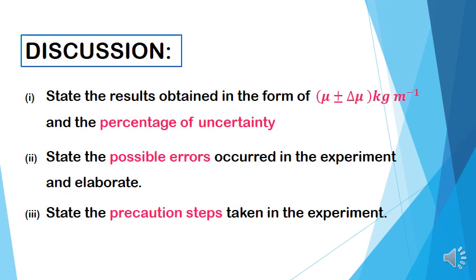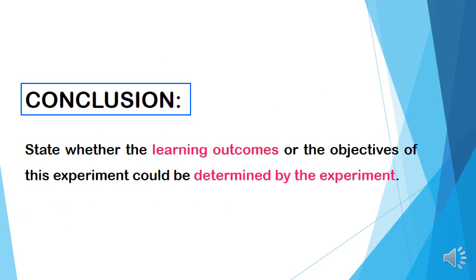Discussion: Roman 1 — state the results obtained in the form of μ ± Δμ kg/m and the percentage of uncertainty. Roman 2 — state the possible errors occurred in the experiment and elaborate. Roman 3 — state the precaution steps taken in the experiment. Conclusion: Roman 4 — state whether the learning outcomes or objectives of this experiment could be determined by the experiment. That's the end of this session. Thank you for joining me and have a nice day.